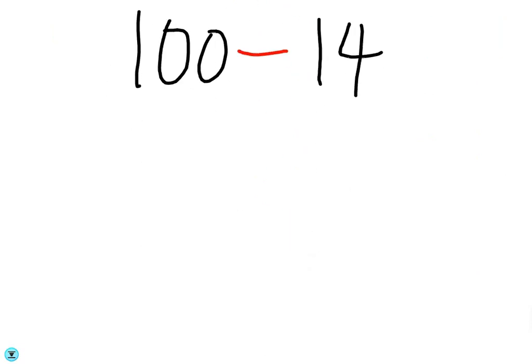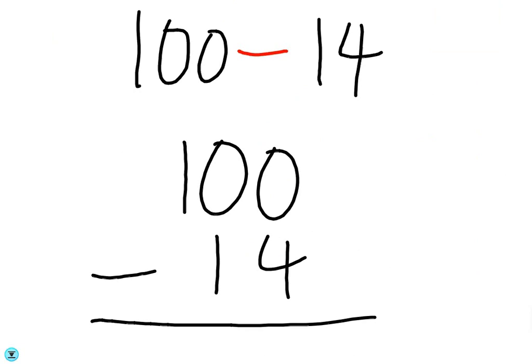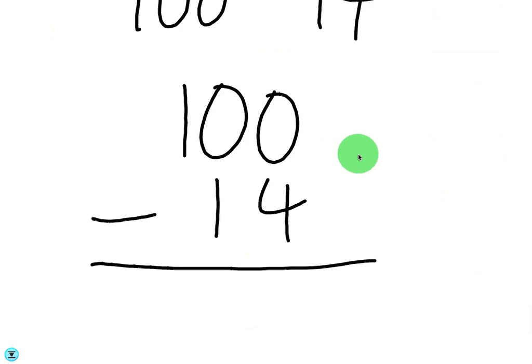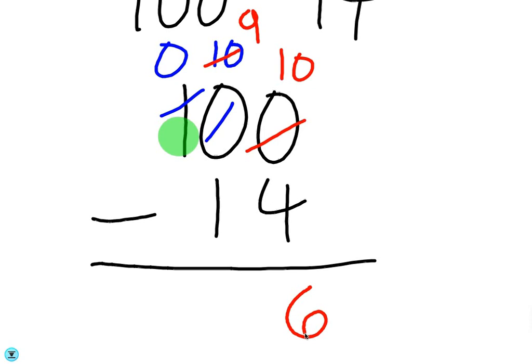If you're not comfortable with subtraction, you can do the long form of subtraction. So 0 minus 4 - I can't do 0 minus 4, so I have to borrow one from here. But there's nothing to borrow from. This is a 0, so I have to borrow from here. This becomes a 0, and that makes that a 10. Now we can borrow one from the 10. That's going to become a 9, and this will become a 10. So this becomes a 6, and this becomes 9 minus 1, which is 8.